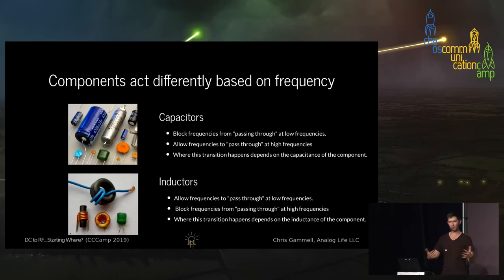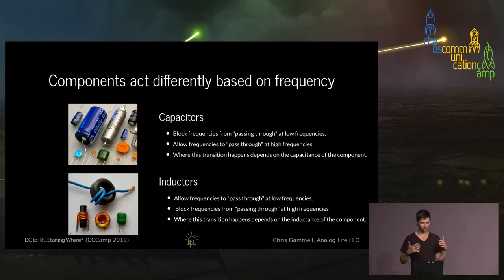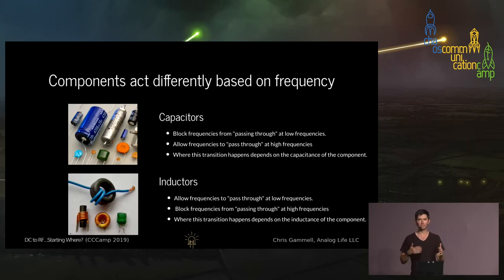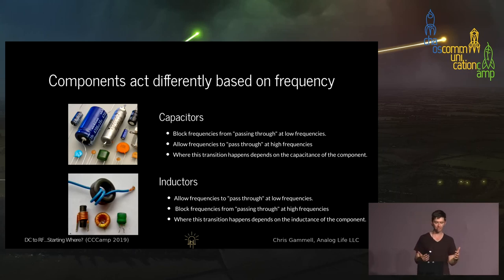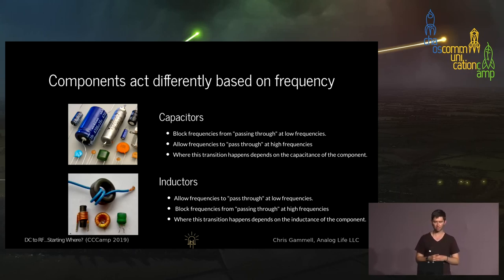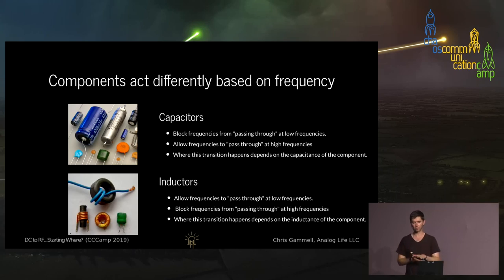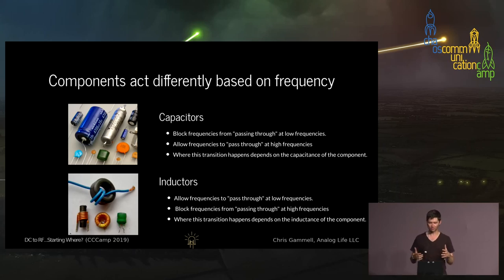Another tricky topic is components. At DC, capacitors are blocking everything — no signal is going through. As you go up in frequency, the signal is effectively able to pass through the capacitor. The transition between blocking and not blocking happens because of the value of the capacitor — the capacitance of that component. In the inverse way, an inductor allows frequencies to pass through at low frequency or DC, and blocks them at higher frequency as you move up in the RF world. These two things play off one another and interact.